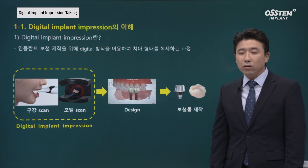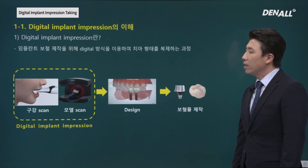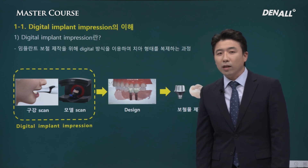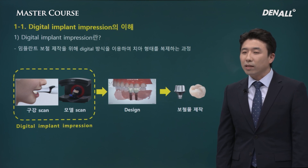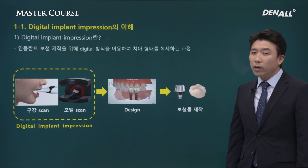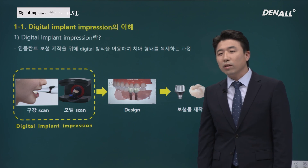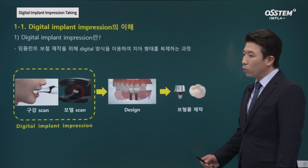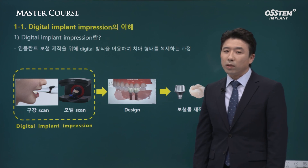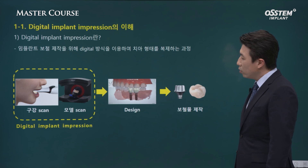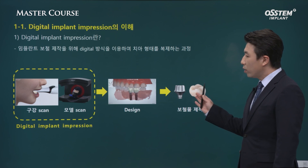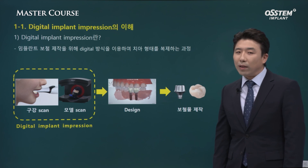Digital implant impression taking. Recently, we use intraoral scanners quite a lot. Using oral scan data means we are scanning the oral cavity directly, so it doesn't go through traditional impression taking — we call this direct digitalization. Model scanning uses traditional impression taking, and the gypsum model is converted into digital data using a model scanner. After that, the data is used in CAD software to design the prosthesis, and finally the designed data is sent to a lab where the result is obtained.